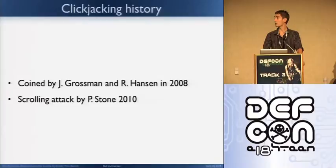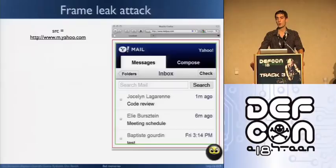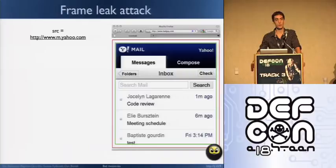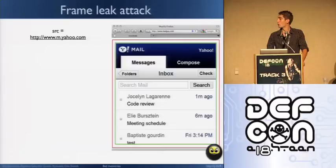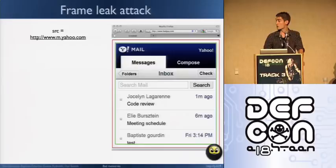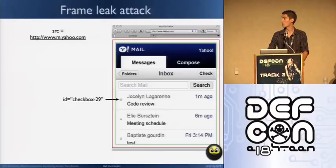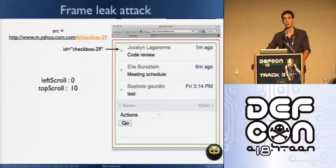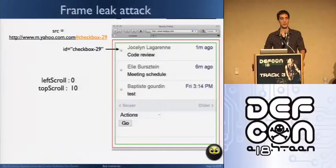Facebook uses a slightly different approach. When framed, Facebook displays a huge dark div on top of the page, preventing the user from interacting with the content, though they can still see their information. When you click on the dark div, the page automatically frame busts. However, this doesn't prevent us from scrolling to specific IDs. So we can still conduct a framing attack on Facebook. Using three different IDs, we can know if the user is logged on Facebook, who they are, and who their friends are. The registration form appears only on the non-logged page, so if we frame the first page and it doesn't scroll, we know the user is logged.